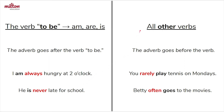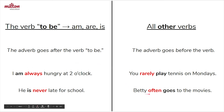So let's talk about all the other verbs. When we use any other verb, the adverb goes before the verb. For example, you rarely play tennis on Mondays — first the adverb, and then the verb. It's the opposite from the verb to be. Another example: Betty often goes to the movies — first the adverb, and then the verb.